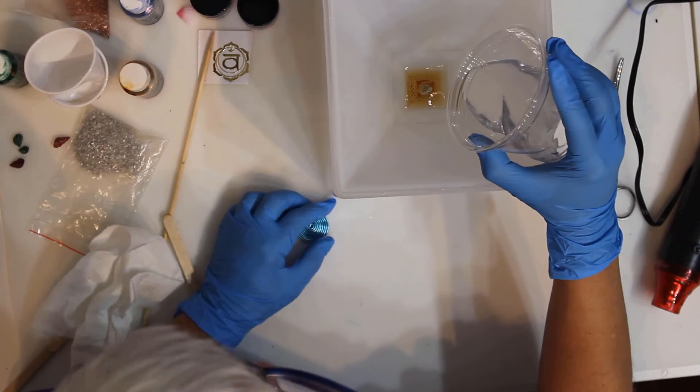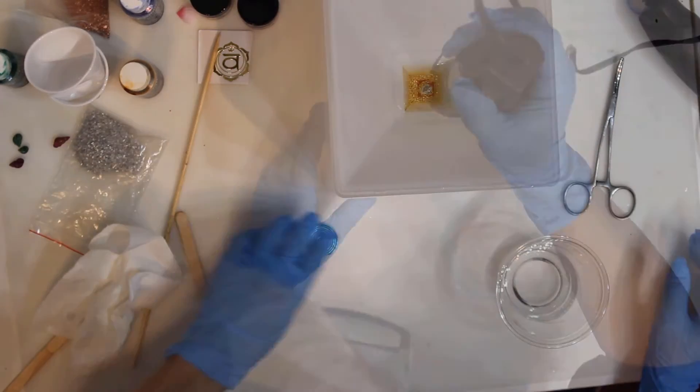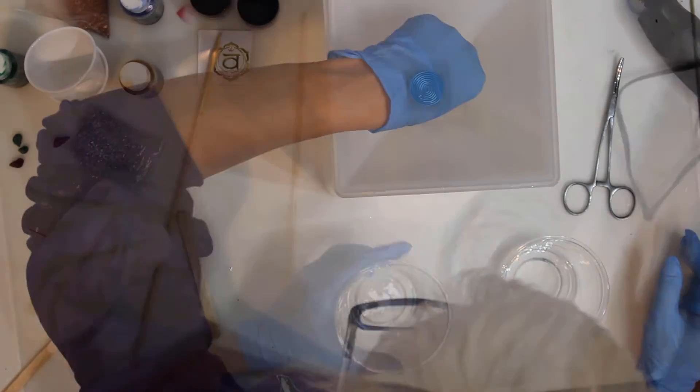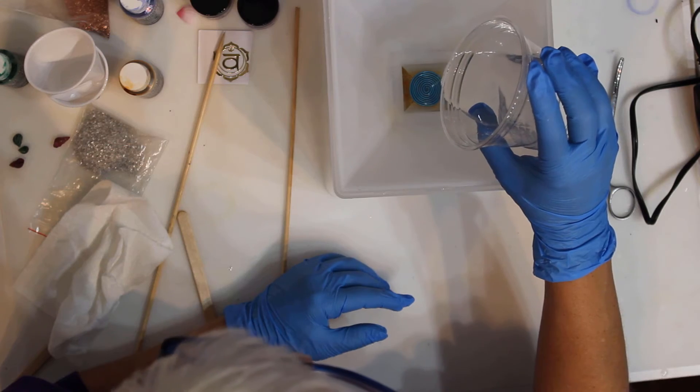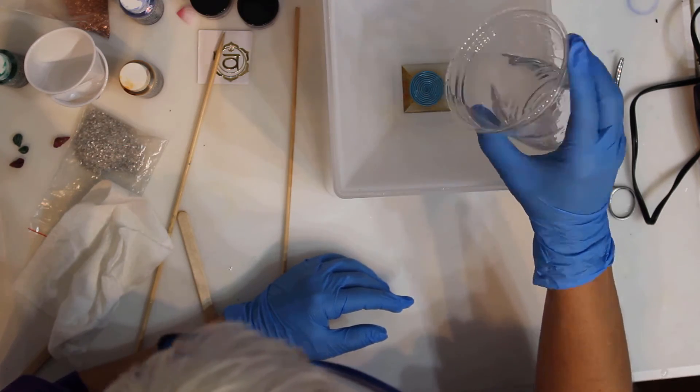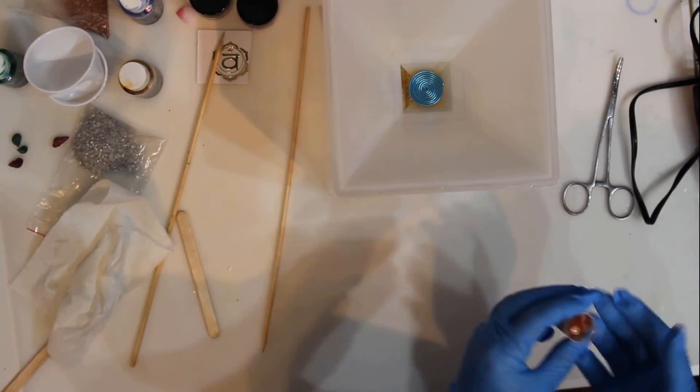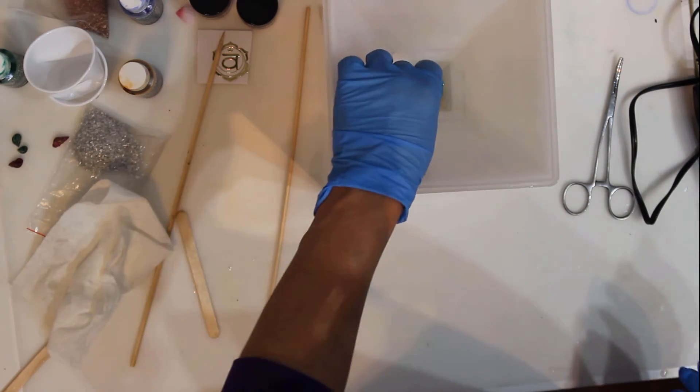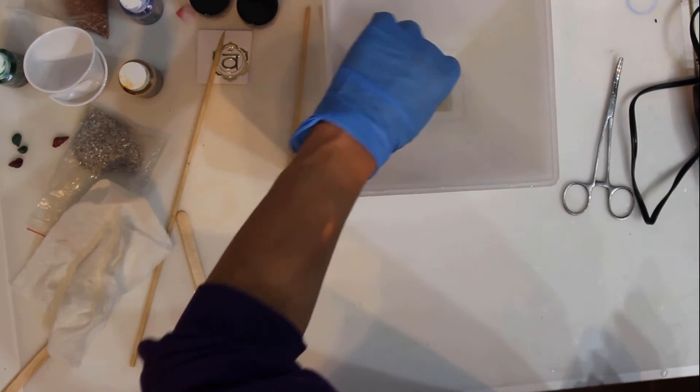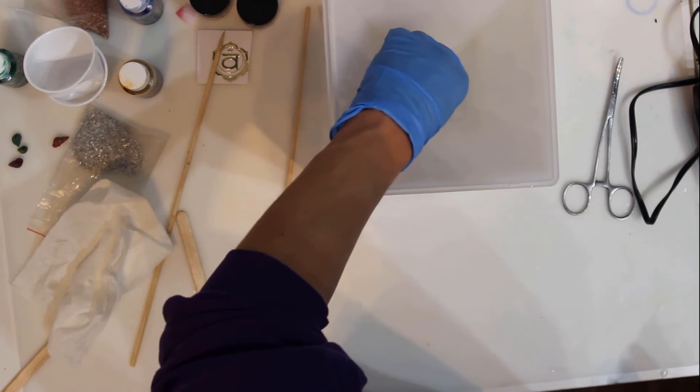Next I will pour another layer of clear resin to submerge the blue spiral. Before this layer completely cures, I will place several stones consisting of jasper, carnelian and citrine.